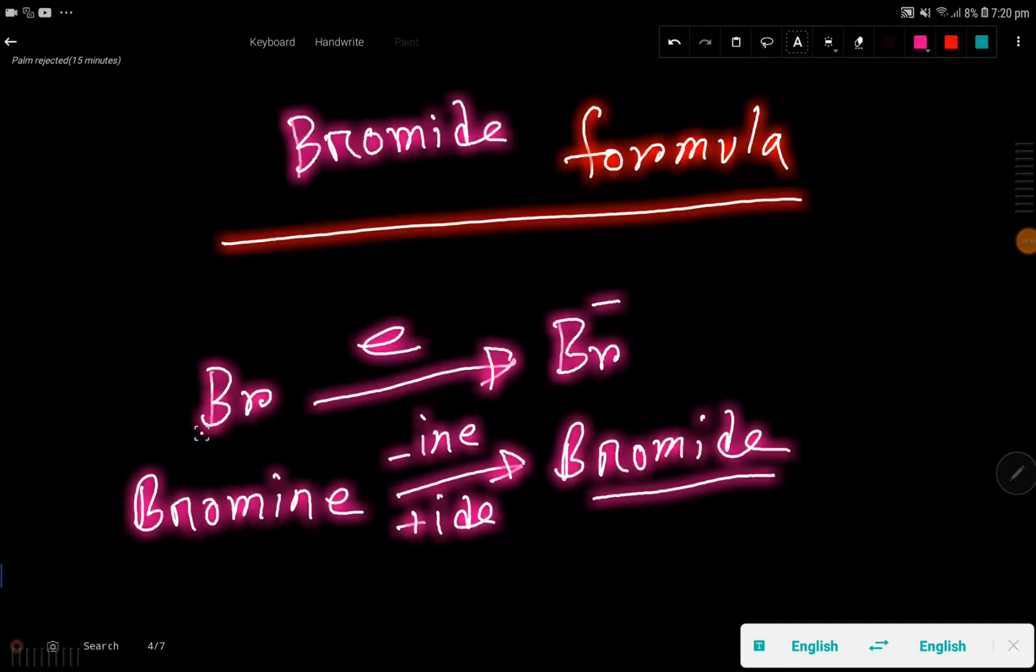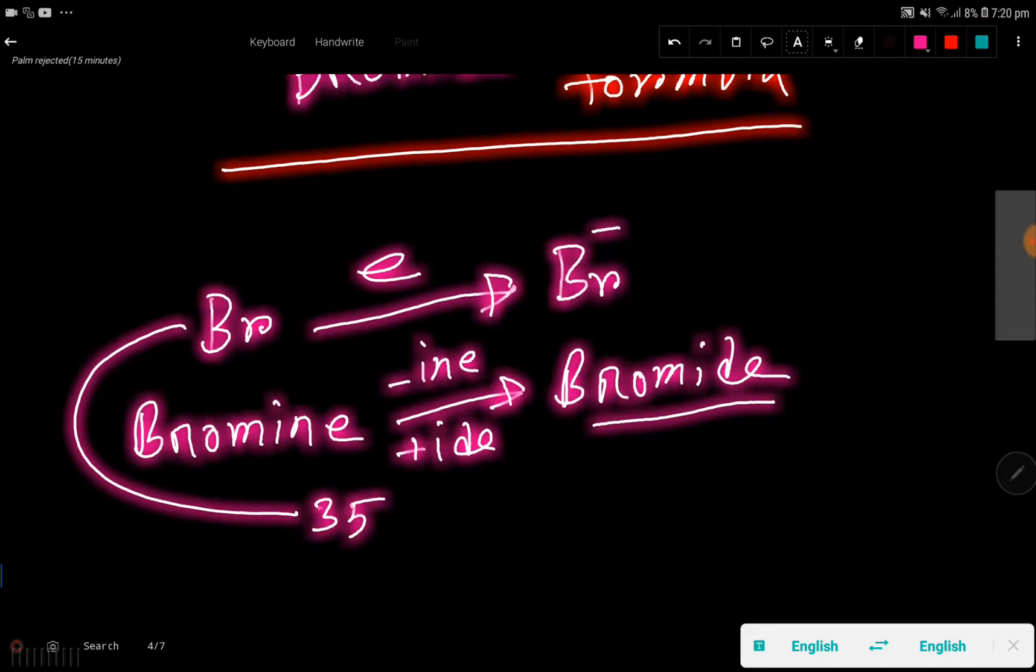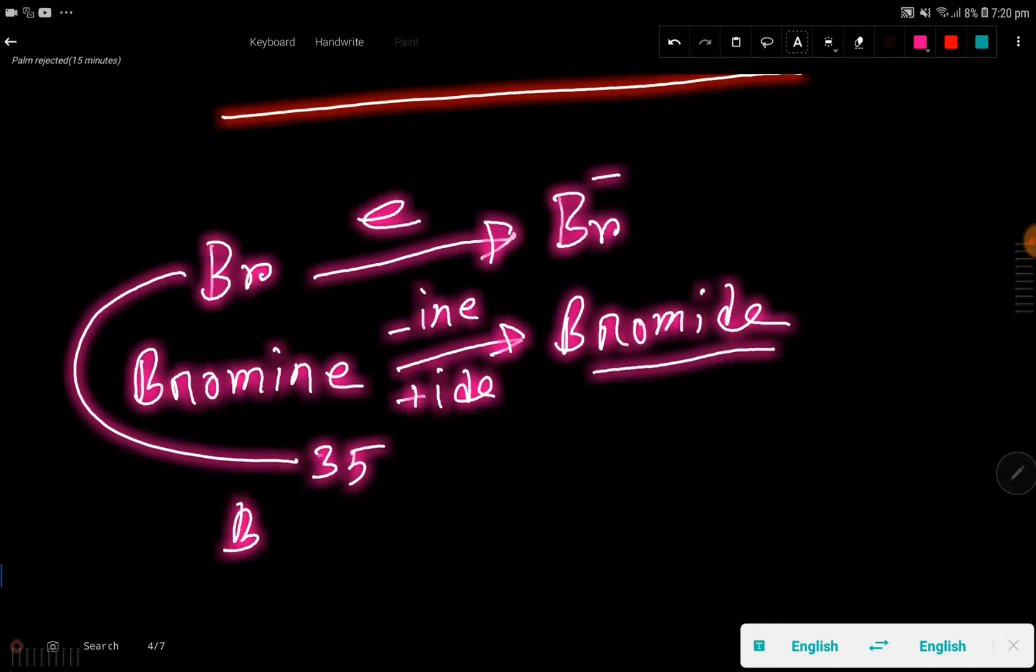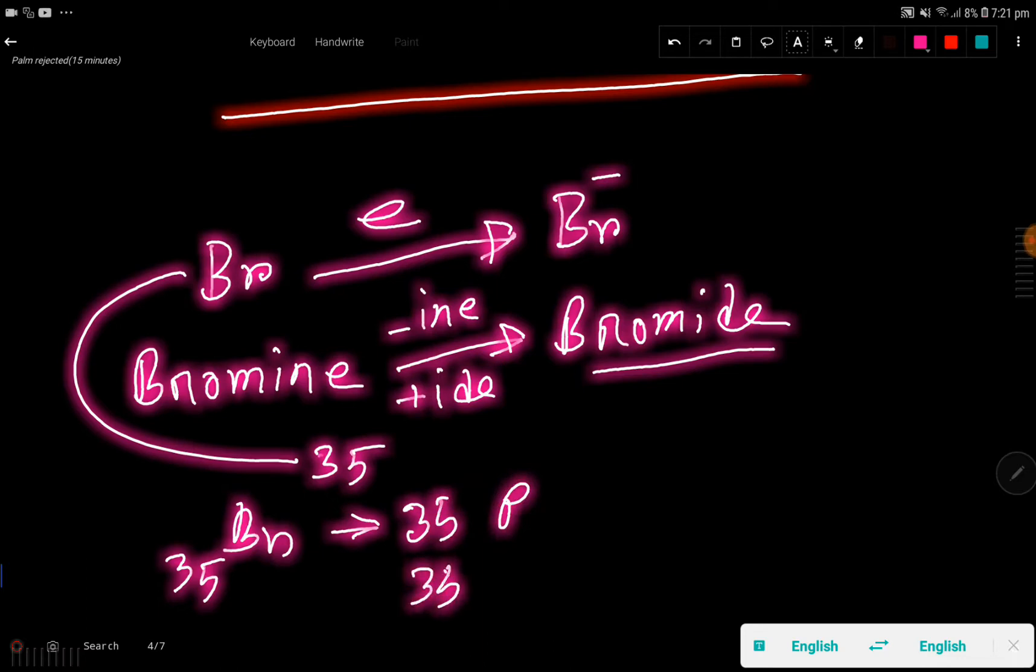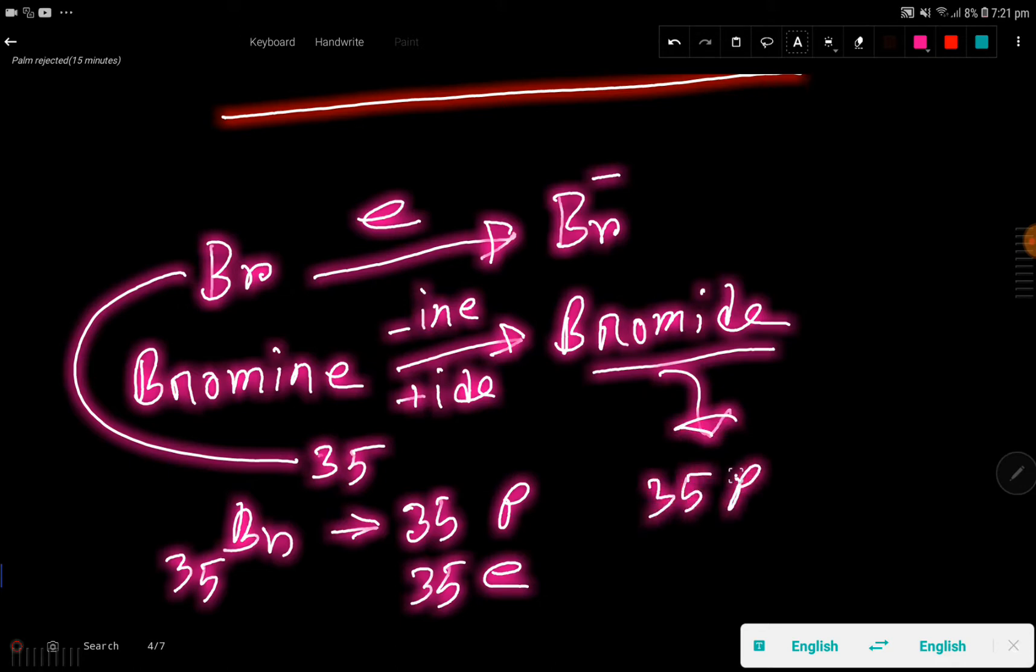The atomic number of bromine is 35. This means that in bromine we have 35 protons and 35 electrons. But in case of bromide, we have 35 protons but 36 electrons.